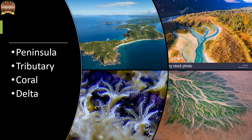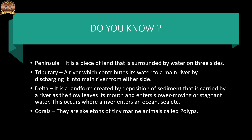Now let us learn about a few important terms. A Peninsula is a piece of land that is surrounded by water on three sides. A Tributary is a river which contributes its water to a main river by discharging into it from either side. A Delta is a landform created by deposition of sediment carried by a river as it leaves its mouth and enters slower-moving or stagnant water, such as an ocean or sea. Corals are skeletons of tiny marine animals called polyps.